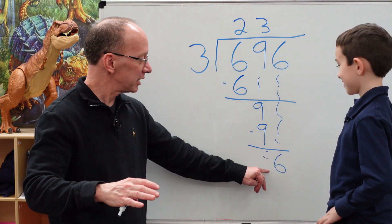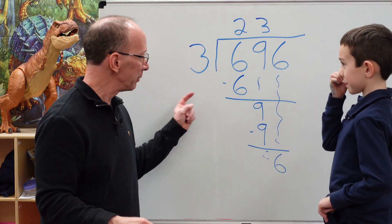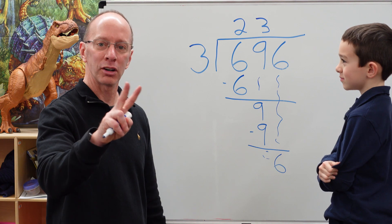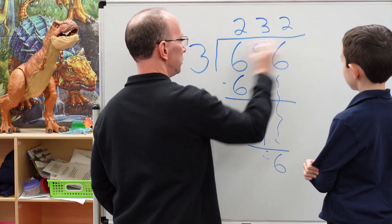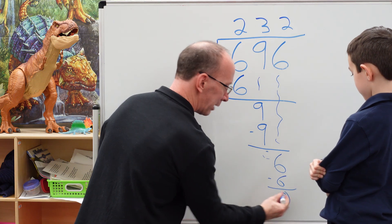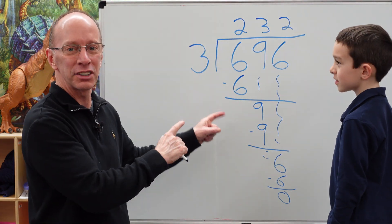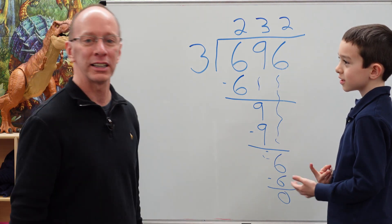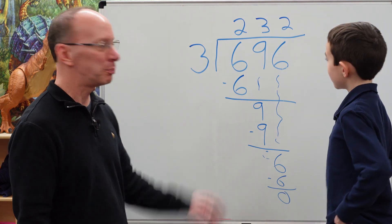We're left with just 6. Start the whole process over again. How many times can I put 3 into 6? Two. Two right here. Two times three equals six. Subtract it. Remainder is zero. That is our answer — 232. We're done, we're finished. We can go get some cookies right now!